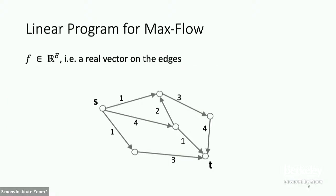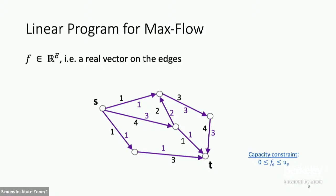We will take a linear algebraic perspective on flows rather than the combinatorial sums of paths. For us, a flow is a vector assigning a real number to every edge. The flow value on edge e should be non-negative, satisfying the direction and bounded above by the capacity.